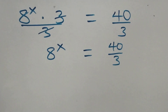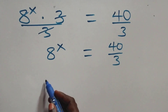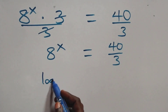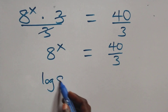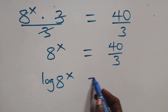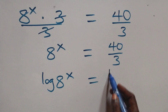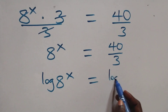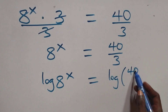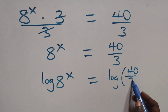Then the next step here: take the log on both sides. We have log 8 raised to the power x equals to log 40 over 3.